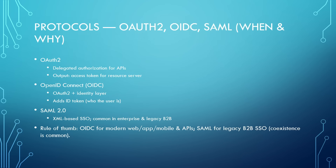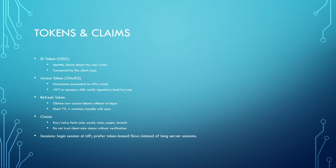OAuth2 is for delegated authorization — it gets you an access token so a client can call an API. OpenID Connect is an OAuth2 extension for identity: it adds an ID token that identifies the user, which is what most modern web and mobile apps use. SAML is XML-based and still very common in enterprise and B2B. A practical rule: use OAuth2 and OIDC for modern apps and APIs, and use SAML for legacy enterprise SSOs. They can co-exist.